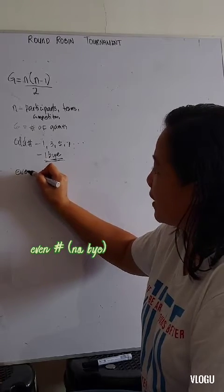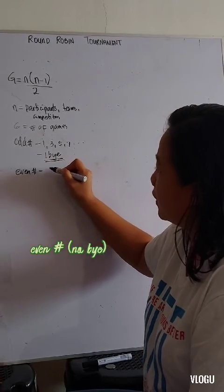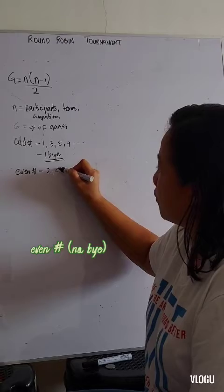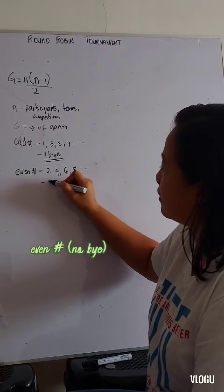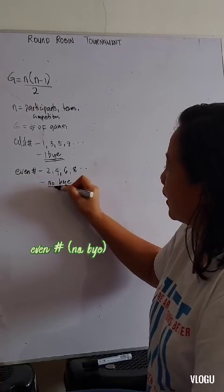If the number is even, like 2, 4, 6, 8, then no buy.